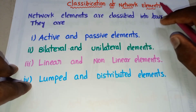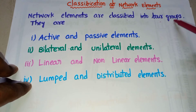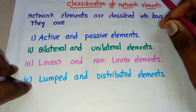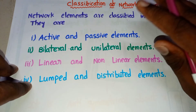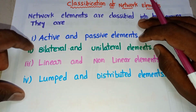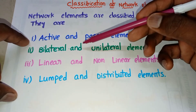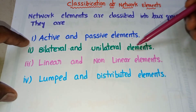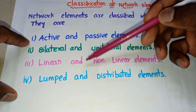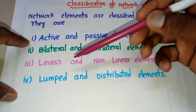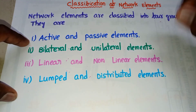Network elements are mainly classified into four groups. First is active and passive elements. Second is bilateral and unilateral elements. Third is linear and non-linear elements. And the last one is lumped and distributed elements. These are the four major types of elements used in a network.